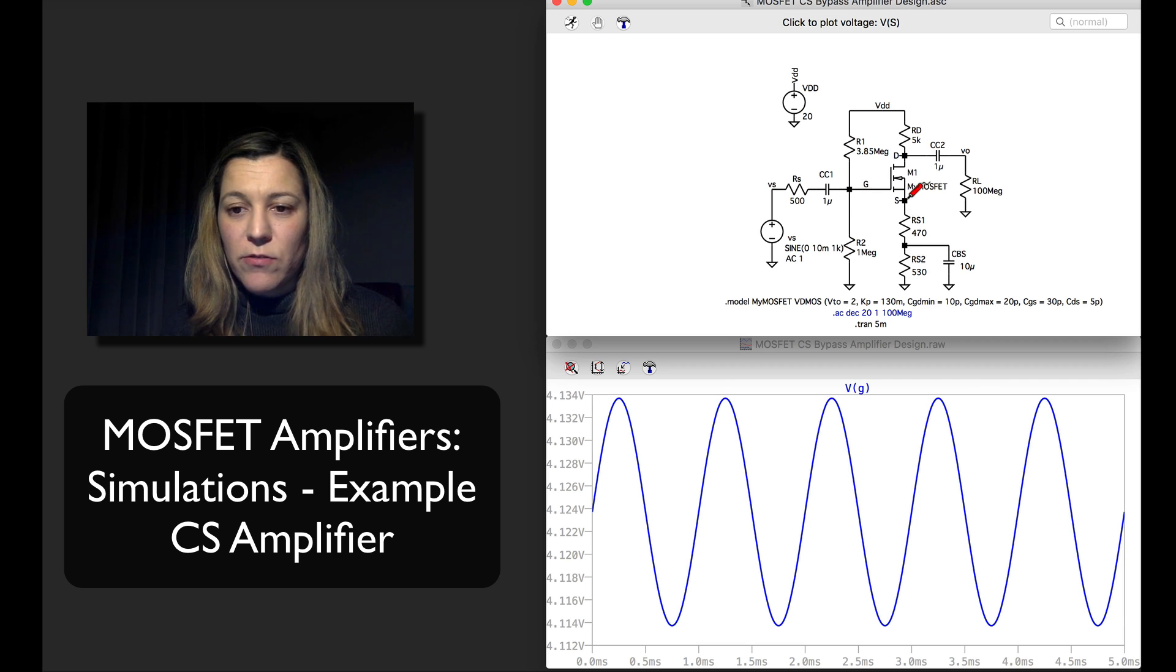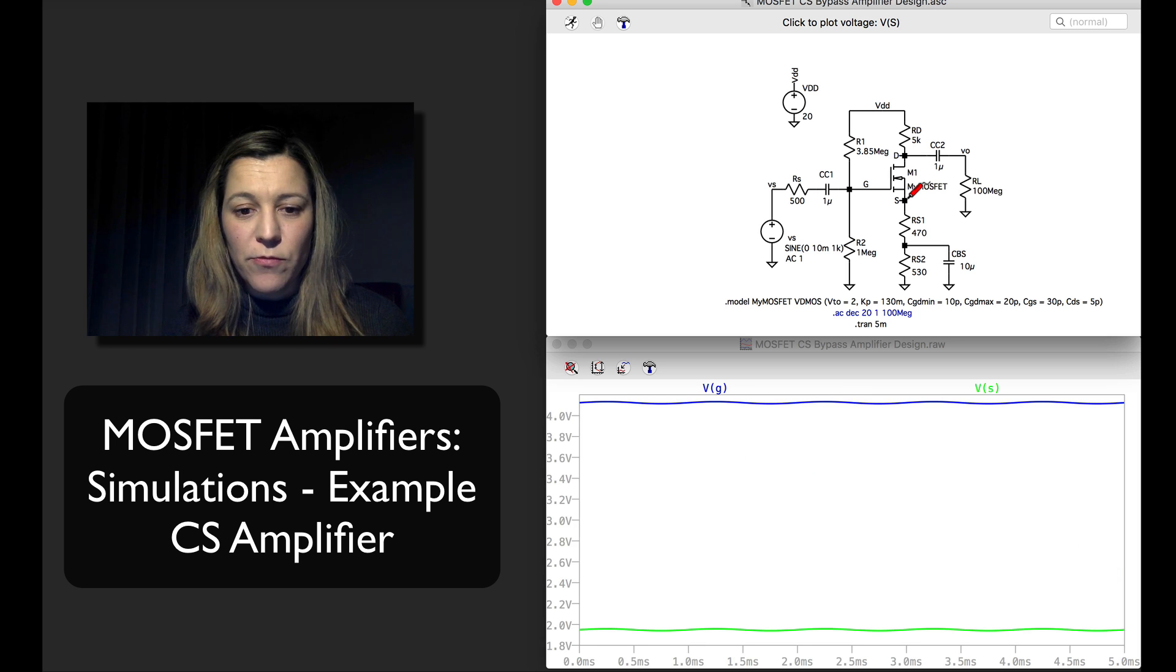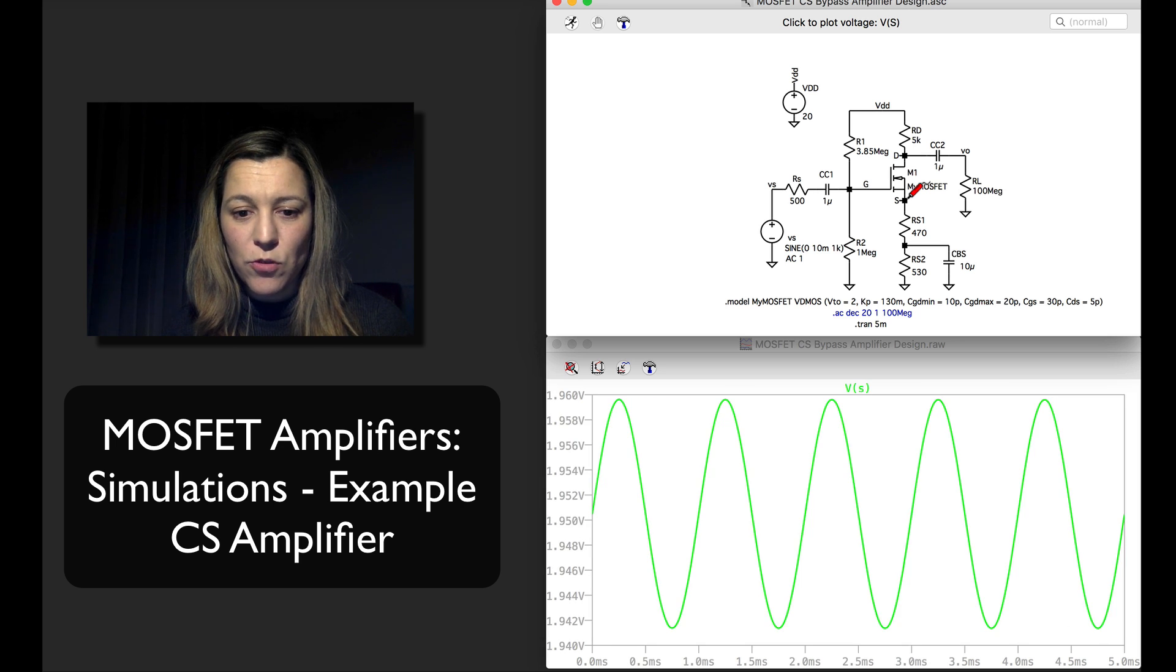I had figured out my source voltage to be around 2 volts, so there it is, because my overall source resistance is 1 kilohm and I have a 2 milliamp current, so 2 milliamps times 1 kilohm should give me 2 volts here. And then up here I'm expecting, again my current is 2 milliamps, my resistor RD is 5k, so I know I'm gonna have 10 volts drop across this resistor and my VDD is 20 volts so I'm expecting my output to be centered at around 10 volts.